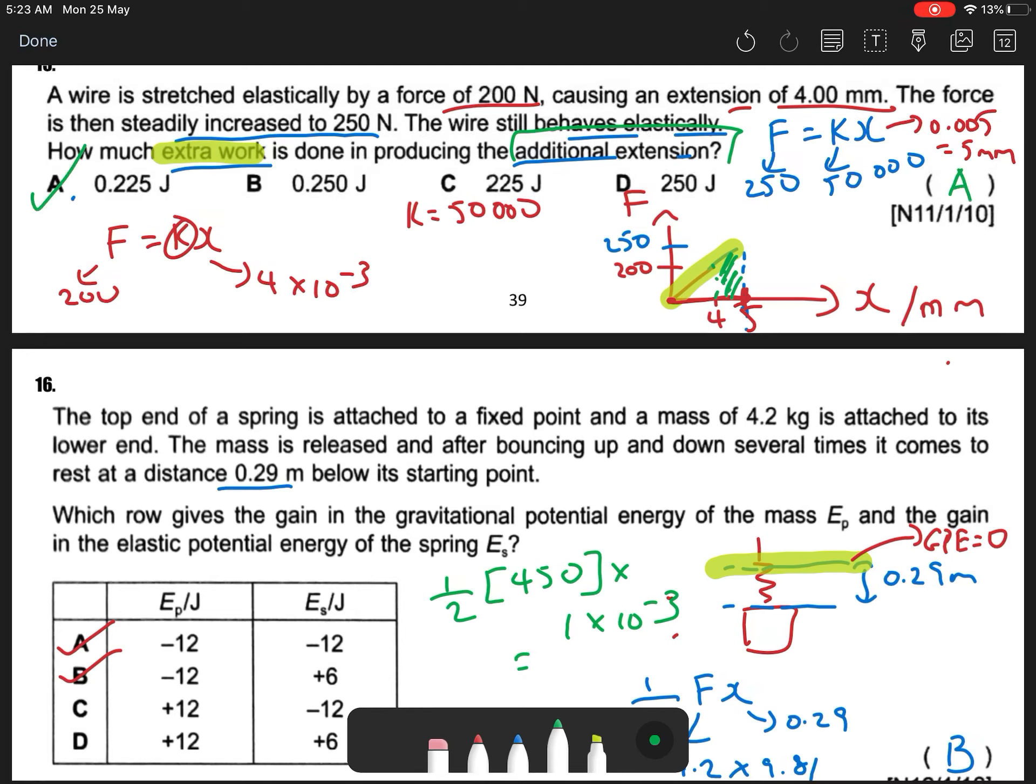So the difficult part is my extension. So this extension is my total extension from 0 to 5. 200N is from 0 to 4. So my additional extension is just one millimeter. That's the question.